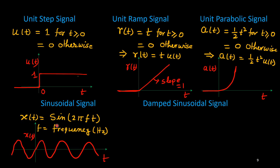For the sinusoidal signal, we consider x(t) = sin(2πft), where f is the linear frequency in Hertz. It is a periodic signal, and as you can see its amplitude is constant at 1.